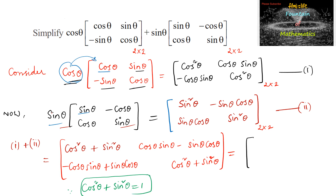The first element becomes 1. cos θ sin θ minus sin θ cos θ gets cancelled, giving 0. Again, sin θ cos θ minus cos θ sin θ is 0. And by the identity cos²θ + sin²θ = 1, the last element is also 1. So we get the identity matrix of order 2, I₂.